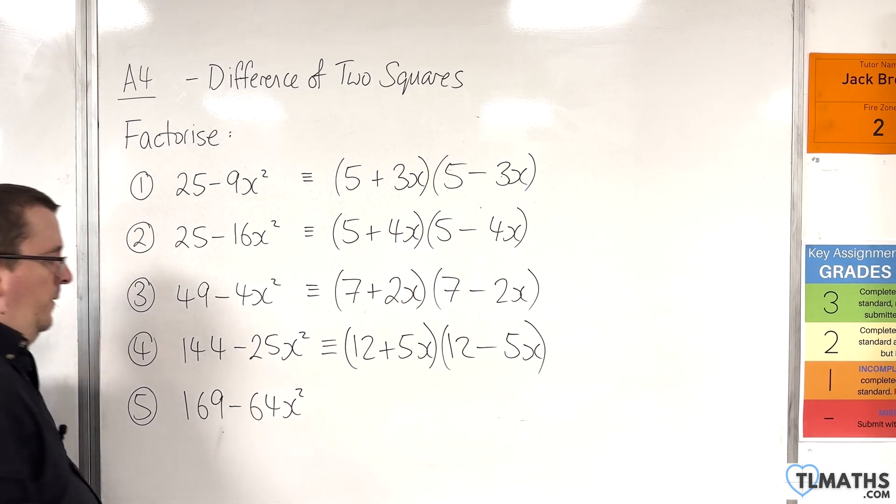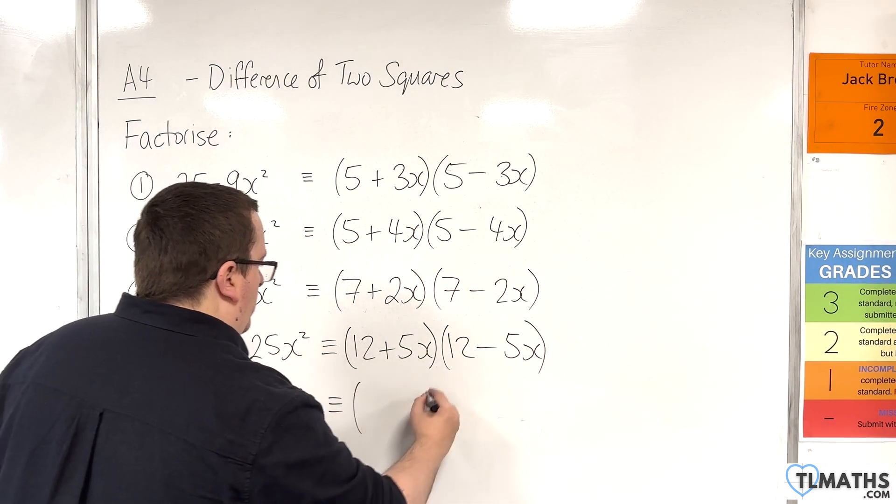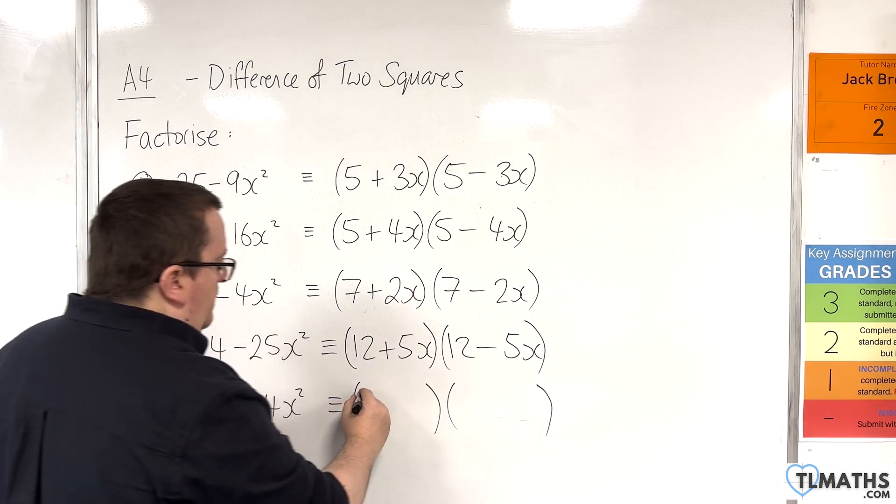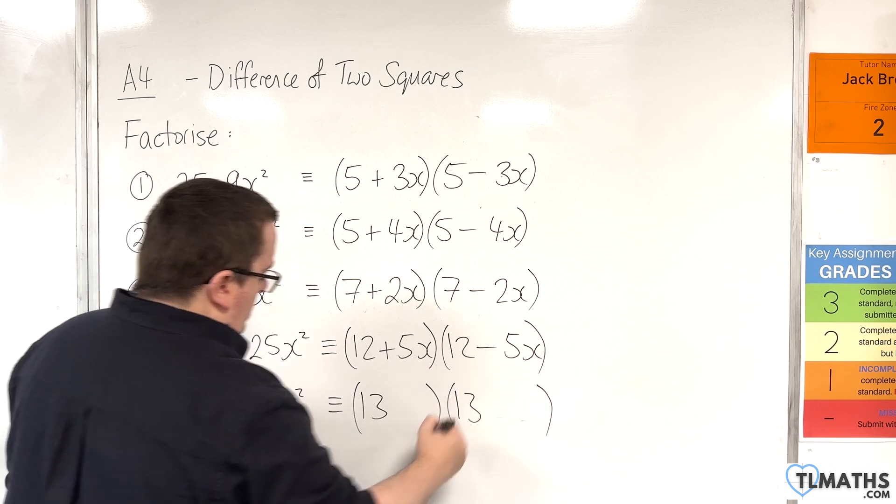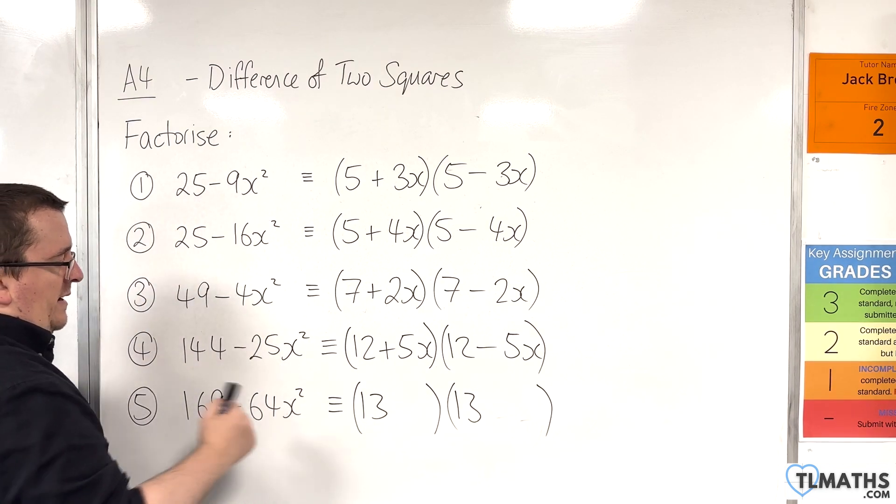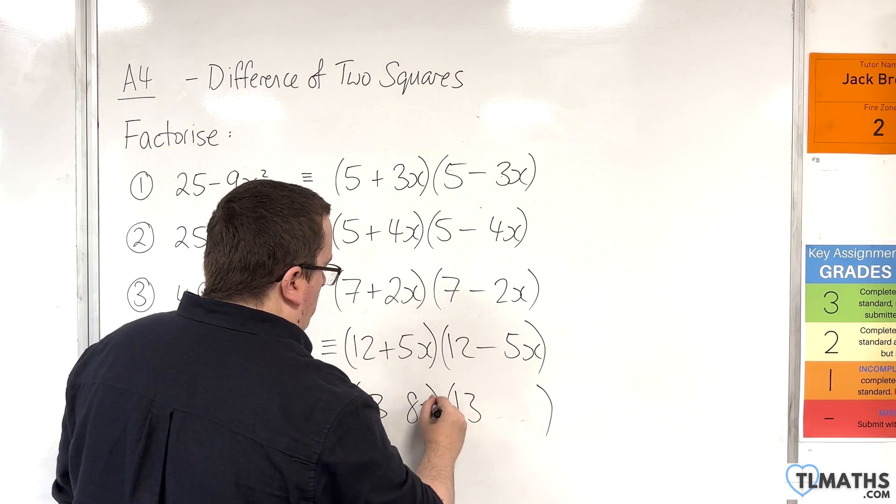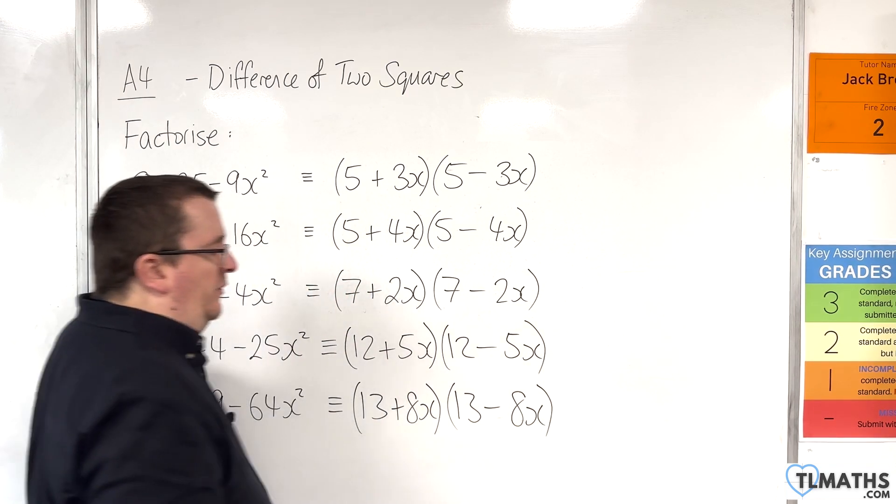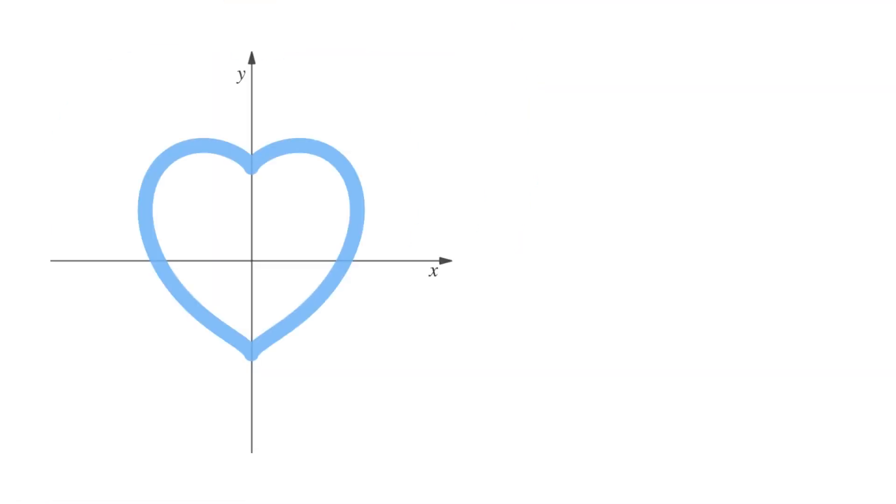Number 5. The square root of 169 is 13. The square root of 64x squared is 8x. One's a plus, one's a minus. And we're done.